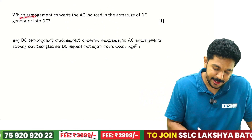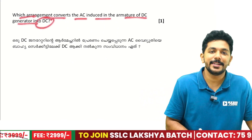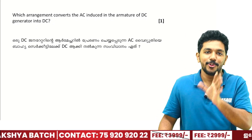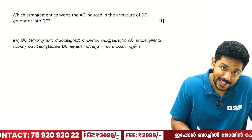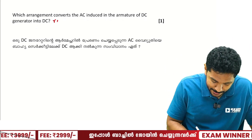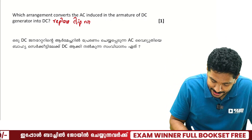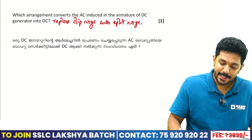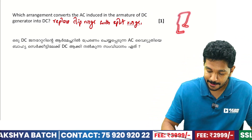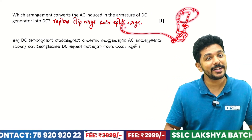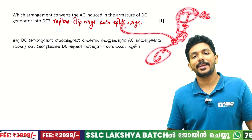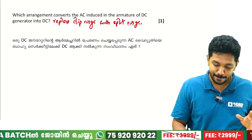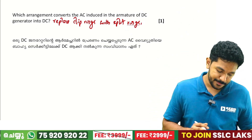Which arrangement converts AC induced in the armature of a DC generator into DC? In a DC generator, we replace the slip rings with split rings. If we have split rings, the output will be DC current. So, replacing slip rings with split rings converts AC to DC in the generator.